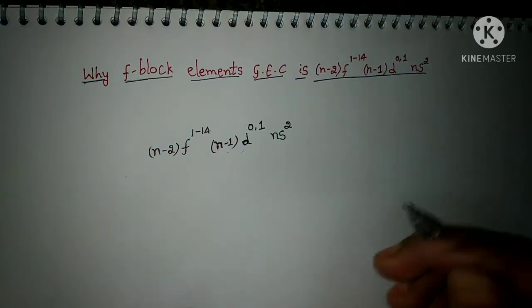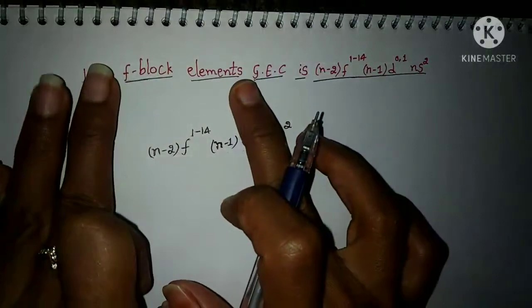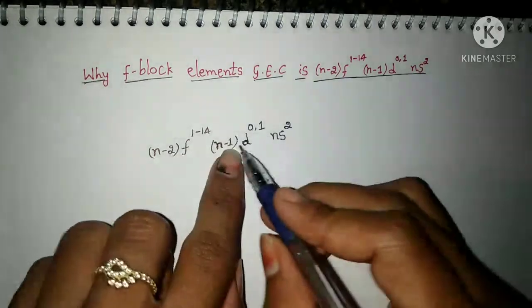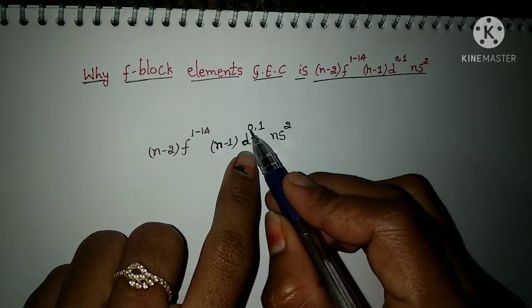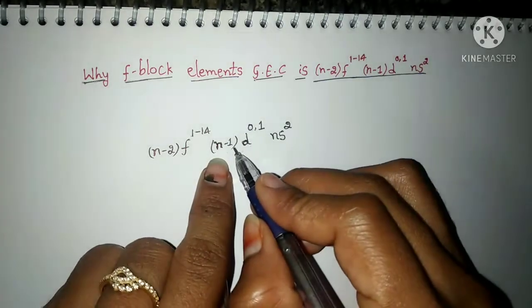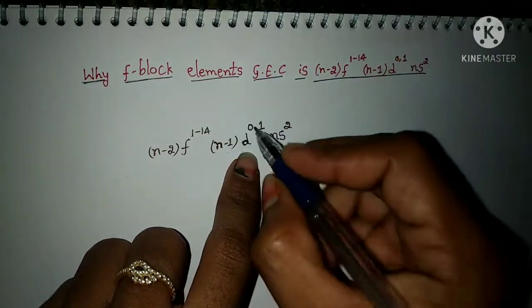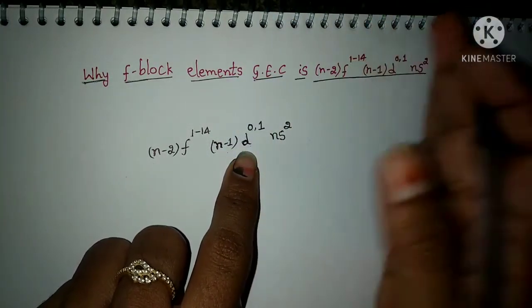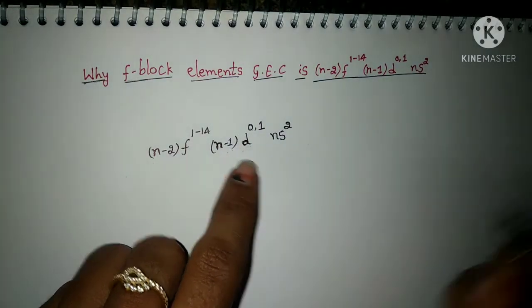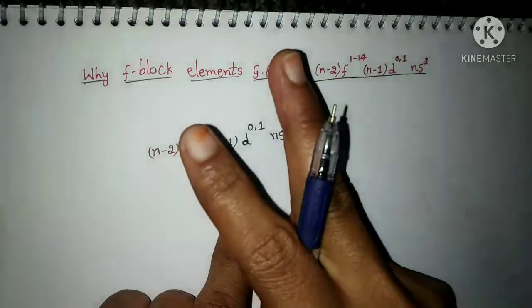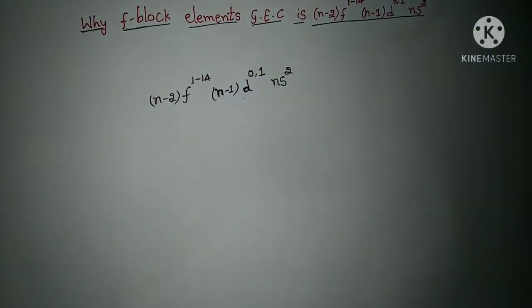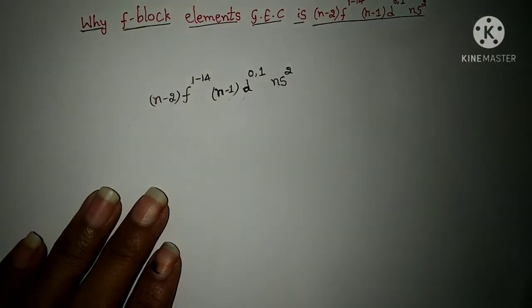This is the general electronic configuration for all f-block elements: in the anti-penultimate shell, f orbital has 1 to 14 electrons; in the penultimate shell, d orbital may have one electron or no electrons. Don't confuse — it is not compulsory that the penultimate shell d orbital must have electrons; there may be zero, or only one electron may be present. In the valence shell, two electrons are present in the s orbital.